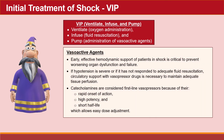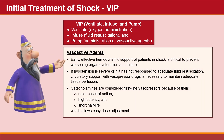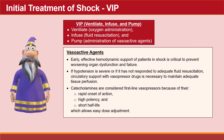The third part of VIP treatment is the use of vasoactive agents. Early effective hemodynamic support is critical to prevent worsening organ dysfunction. If hypotension is severe or has not responded to adequate fluid resuscitation, circulatory support with vasopressor drugs is necessary. Catecholamines are considered first-line vasopressors because of their rapid onset of action, high potency, and short half-life, which allows easy dose adjustment.